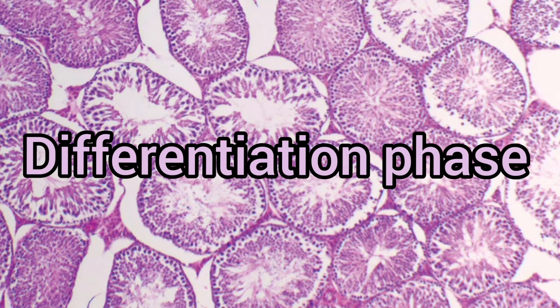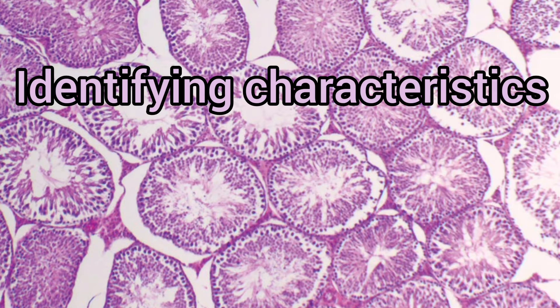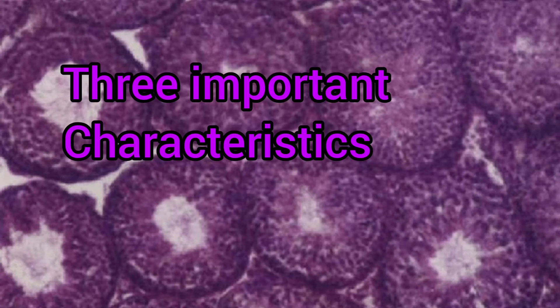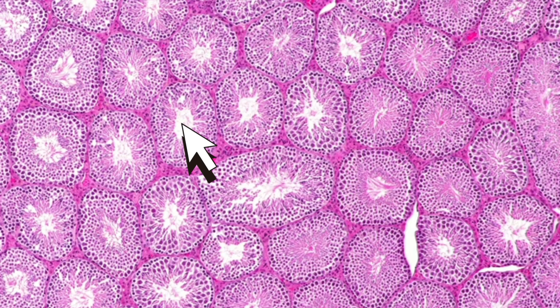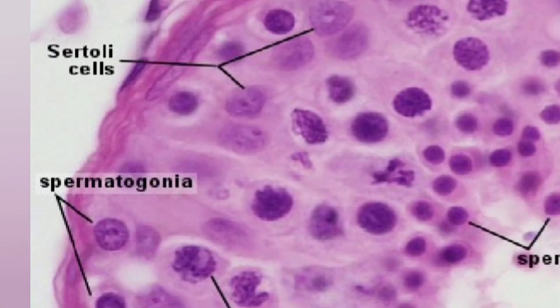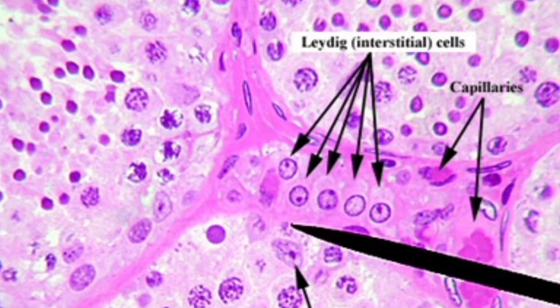What are the identifying characteristics of the TS of mammalian testis? There are three major identifying characters. First, the seminiferous tubules are easily seen in the cross section of the testis. Second, the presence of large cells called Sertoli cells is a characteristic feature of this slide. Third, the presence of interstitial cells or Leydig cells is evident.